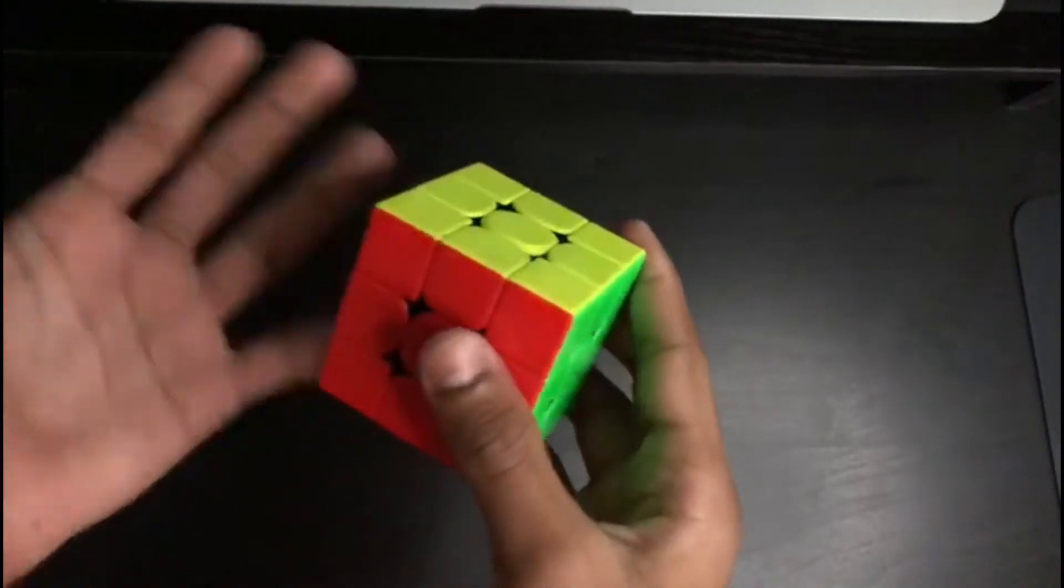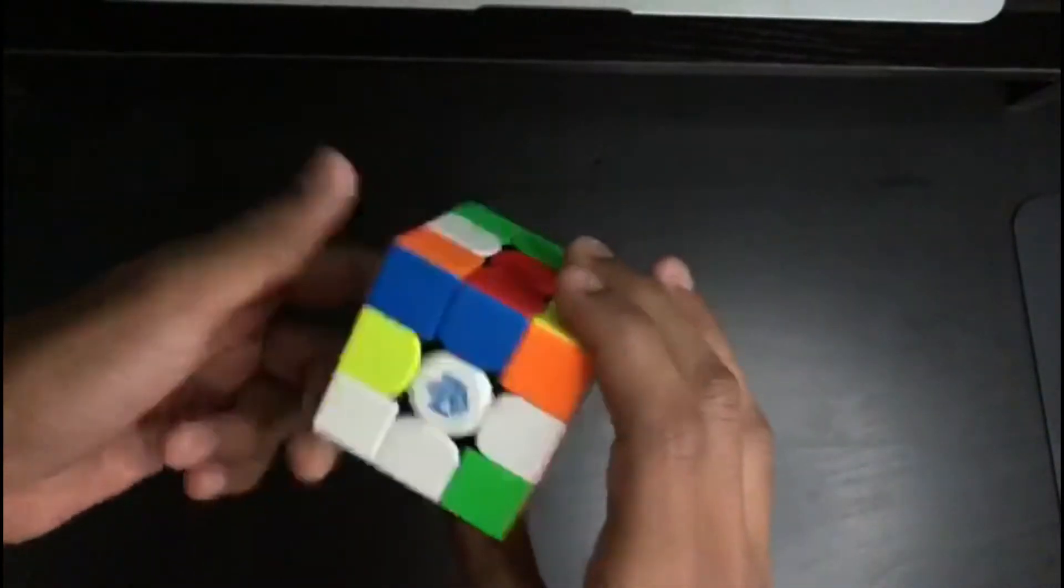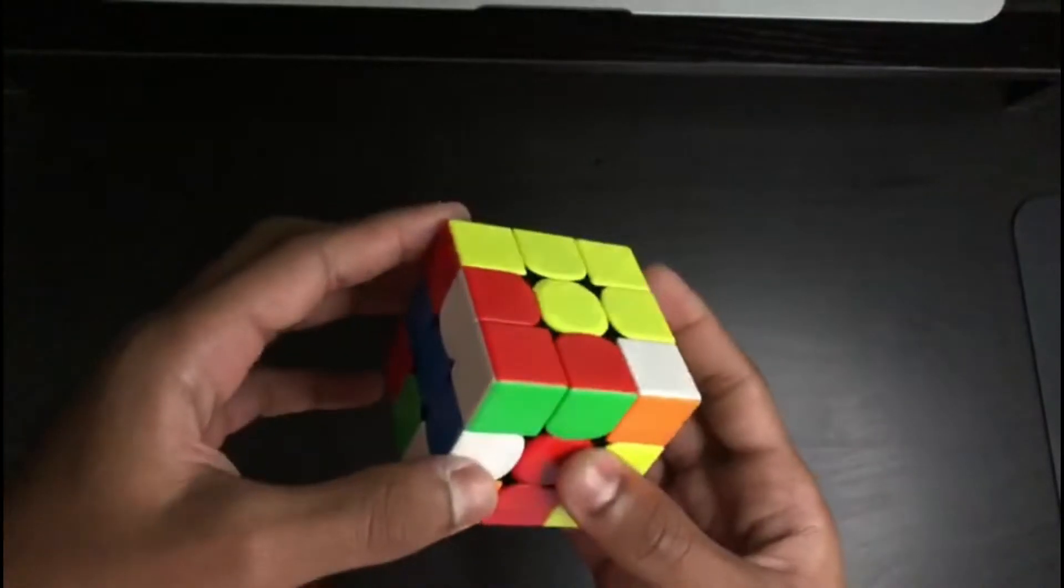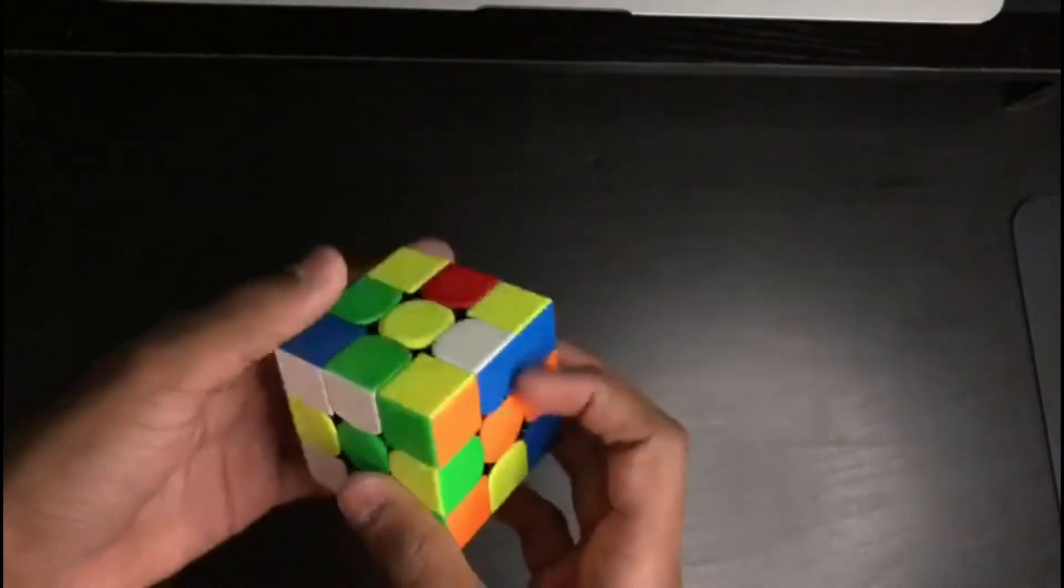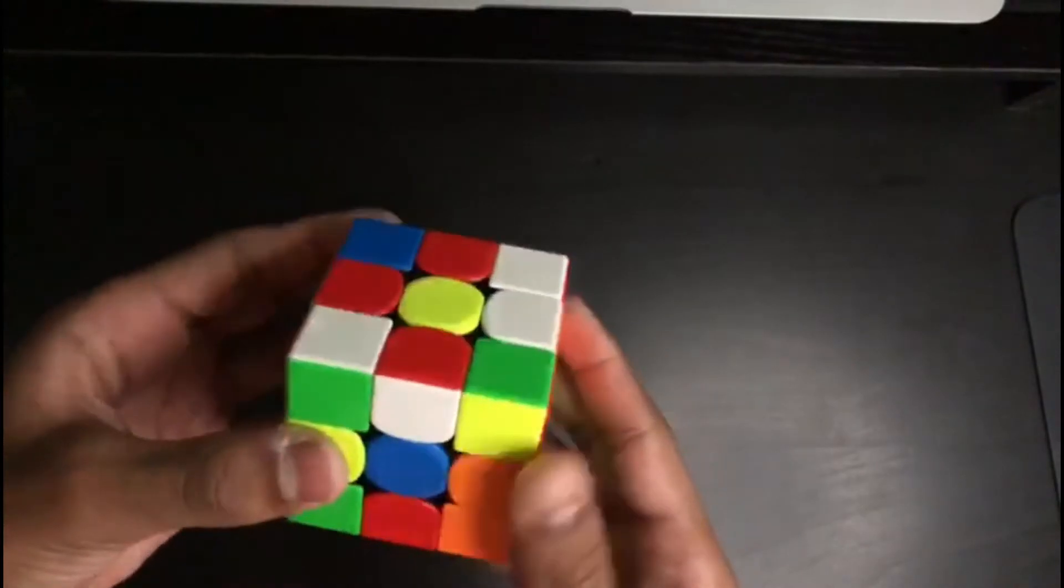Number one, not using inspection time. So whenever anyone scrambles a cube, the first thing they always do is inspect the cube. So that way they can plan out the cross, do some stuff, that way they'll know what to do so they won't pause. So if they finish something and they have to pause to look around, yeah, I think you get it.